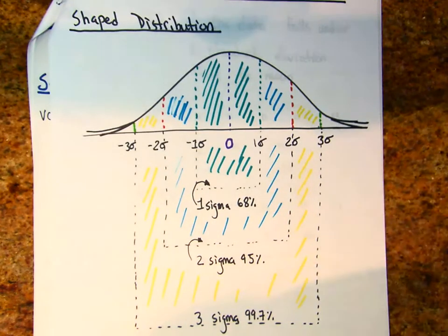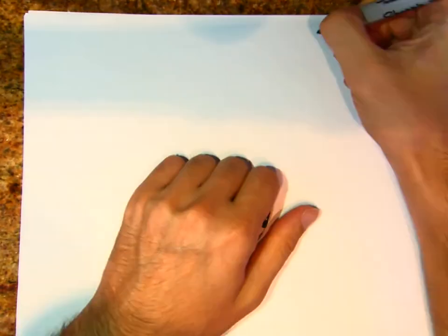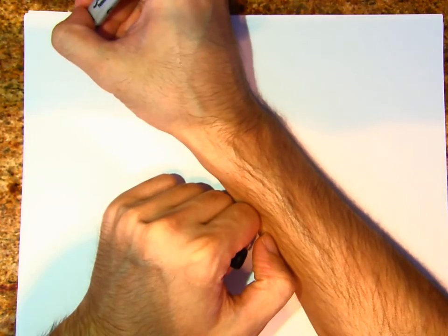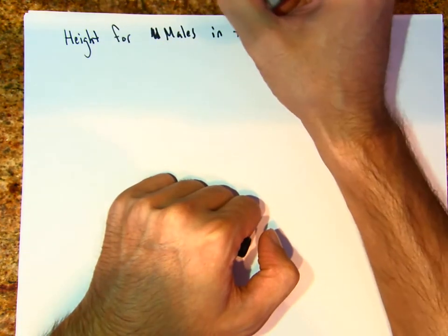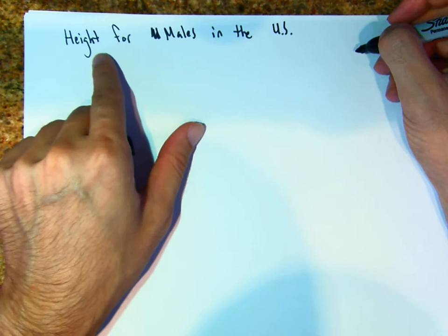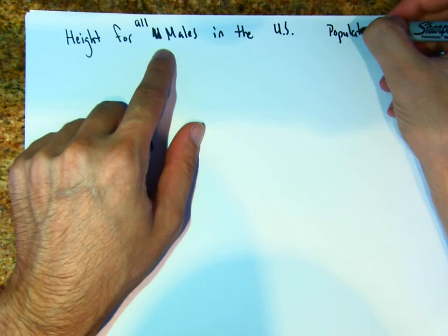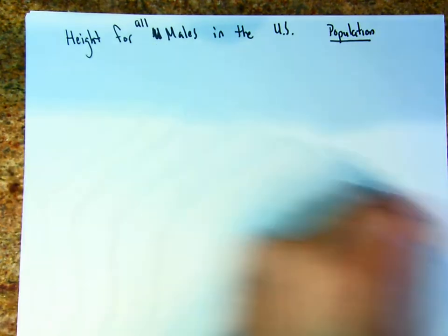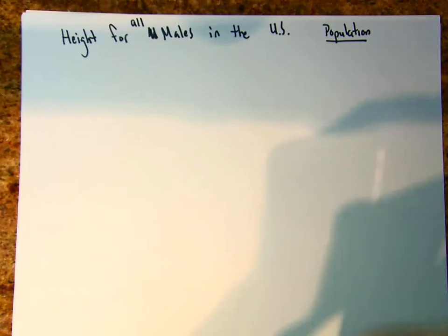Let's go through an example. On a new piece of paper, write this horizontally. We're going to talk about height for males in the U.S. Since we're talking about all males in the United States, we're talking about a population. The symbol for the population mean is mu (μ), and the symbol for population standard deviation is sigma (σ).